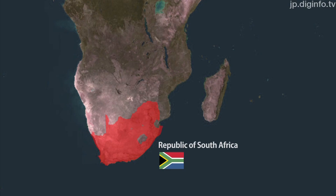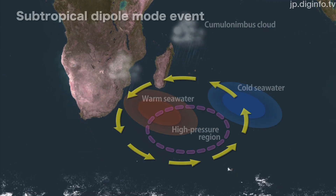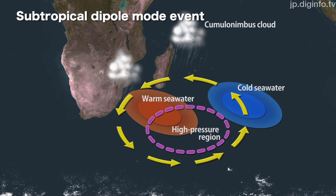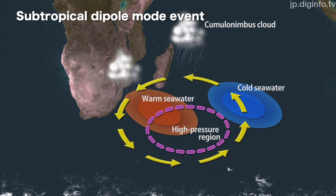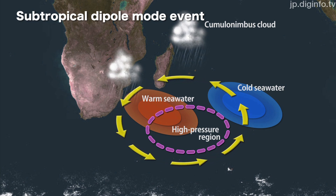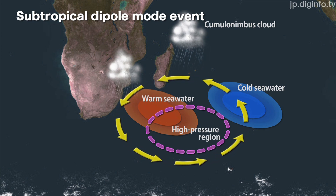In addition, it has recently been confirmed that climate variation phenomena are also occurring in the South Indian and South Atlantic Oceans. These include subtropical dipole mode events, which are similar to El Niño and La Niña.